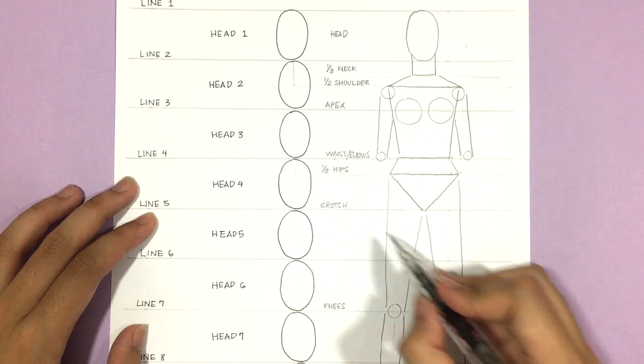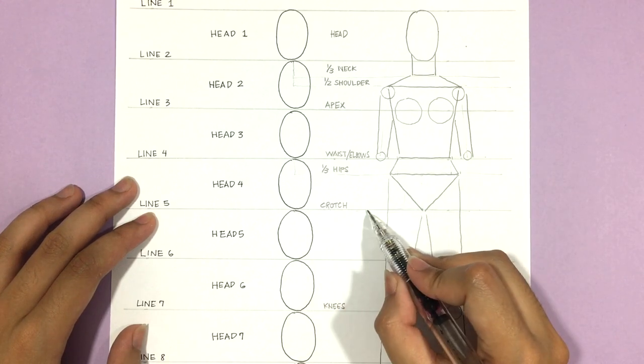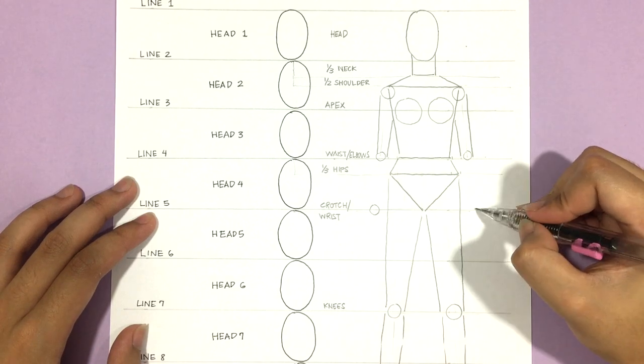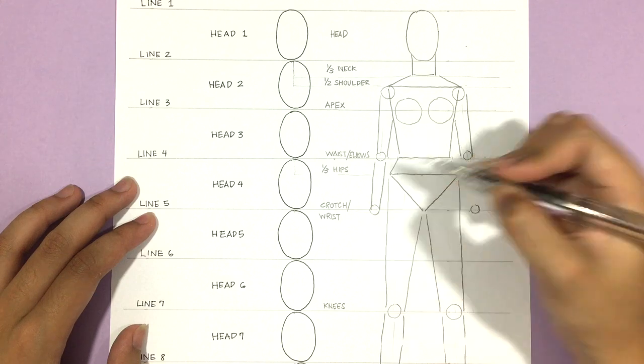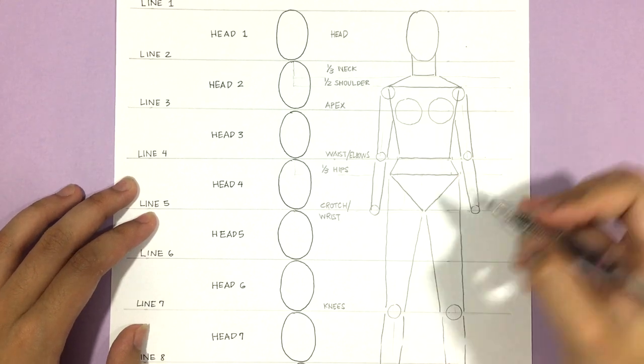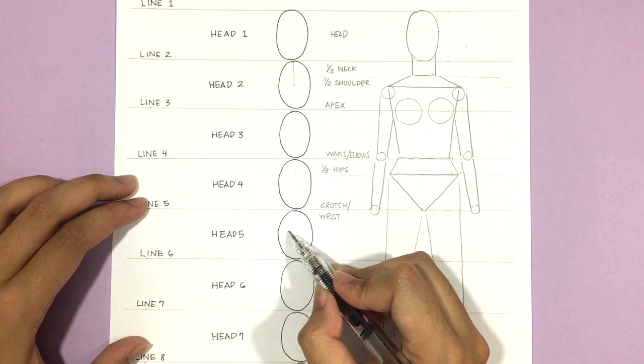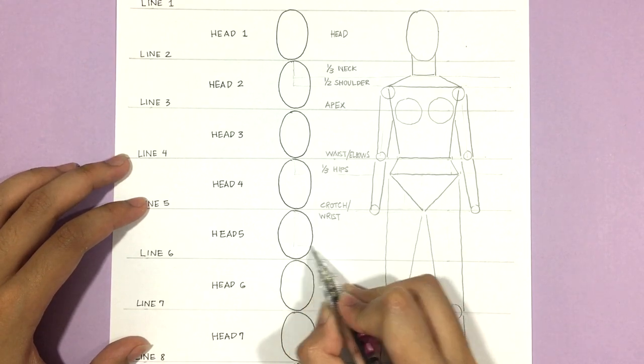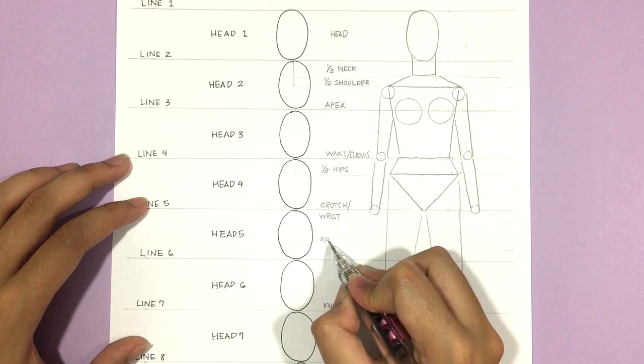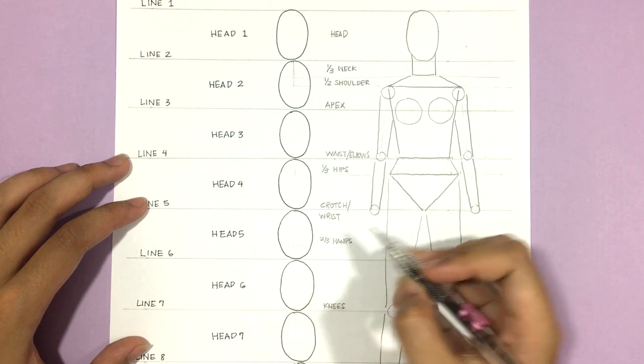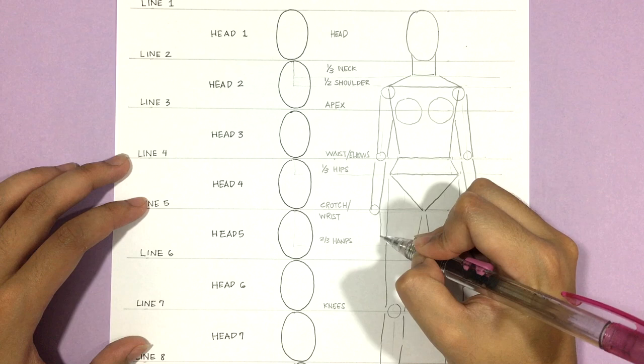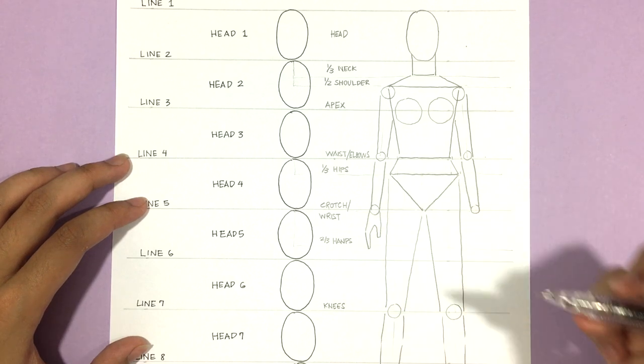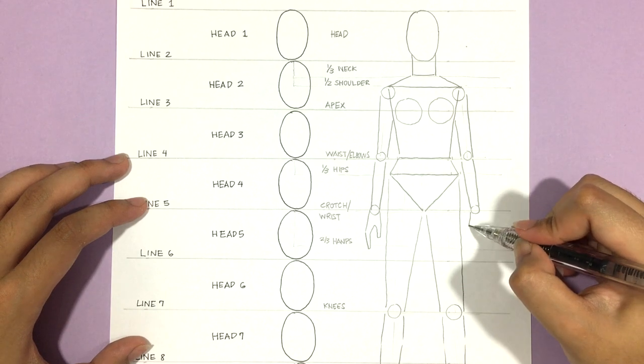And the top of head five, which is where the crotch is, that guideline is also for the wrists. Then finally, roughly the size of head five, I say about two thirds of head five is where the hands are going to be. Now you can draw the hands as large as head five, but I wouldn't draw it any smaller than two thirds of head five. And that is basically it.